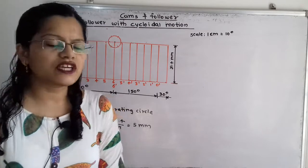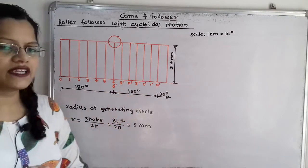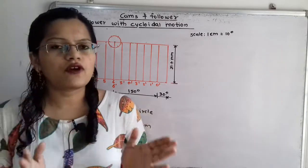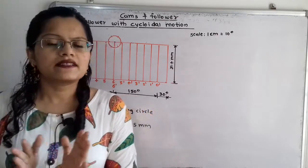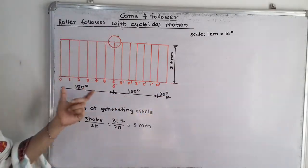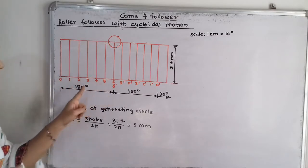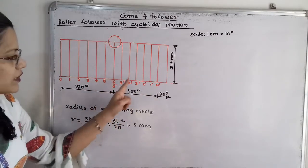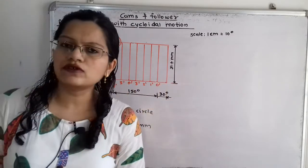The outstroke is for the first 180 degrees, the return stroke for the next 150 degrees, and the remaining period is the dwell period. During the dwell period the follower remains at rest — there is no motion. According to our scale, 180 degrees corresponds to 18 cm, the 150-degree return stroke to 15 cm, and the 30-degree dwell to 3 cm.